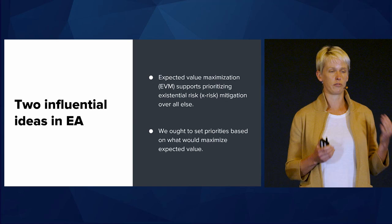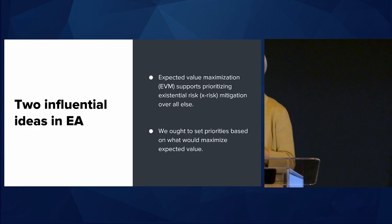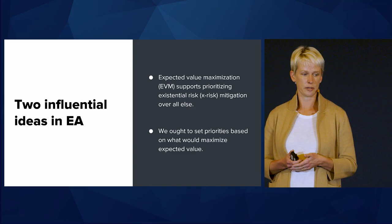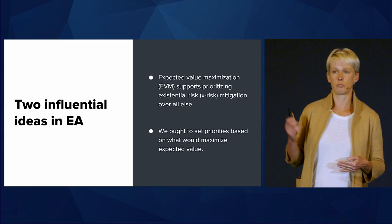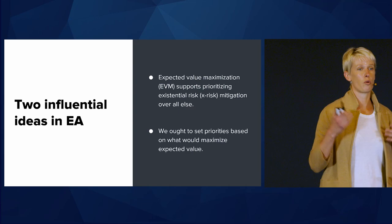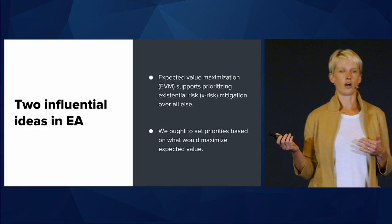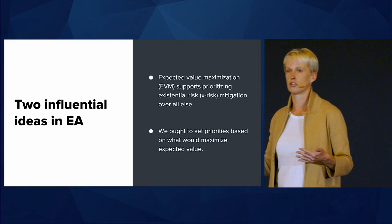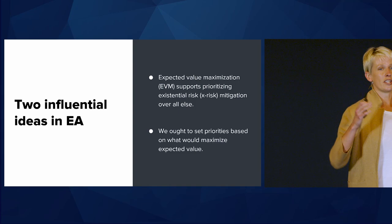In this project, we took on what we take to be two influential ideas in EA. We think these ideas are both commonly held and have been really influential in moving a lot of money in the last few years. So we wanted to give them a deeper look. These two ideas are: first, that expected value maximization supports prioritizing existential risk mitigation work over all else — that when we do the cost-effectiveness estimates this way, we find that existential risk mitigation is robustly favored over global health and animal welfare causes.